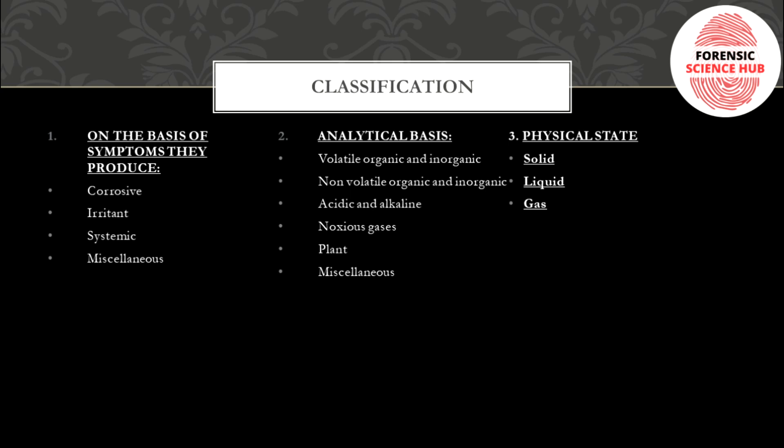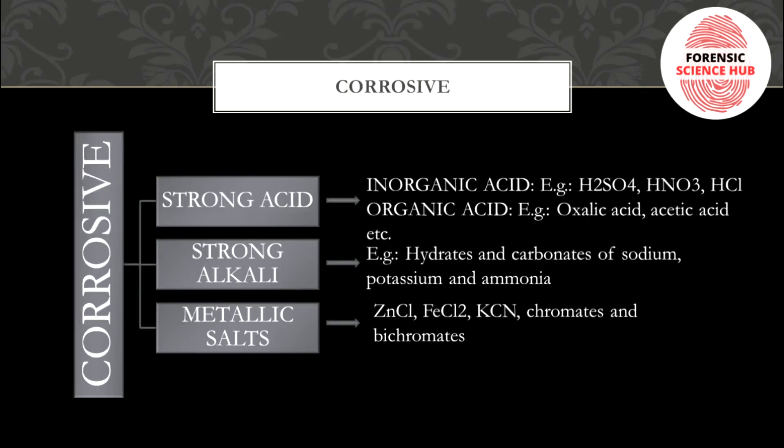First come corrosive poisons. Corrosive poisons are those that cause inflammation on your body at the site of contact — wherever that poison is applied, it causes inflammation or corrosion. So corrosives cause some kind of inflammation or corrosion whenever they reach your body. They are further of three types: strong acid, strong alkali, and metallic salts.